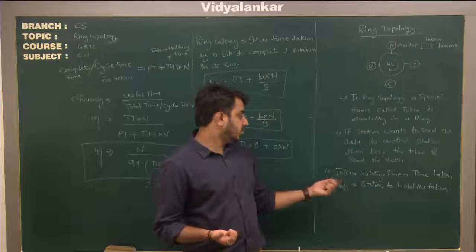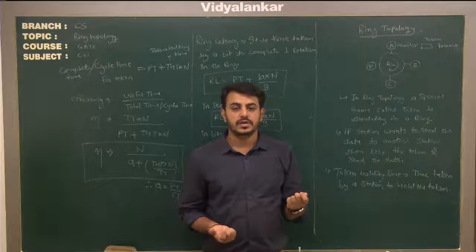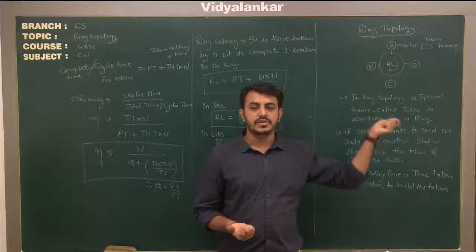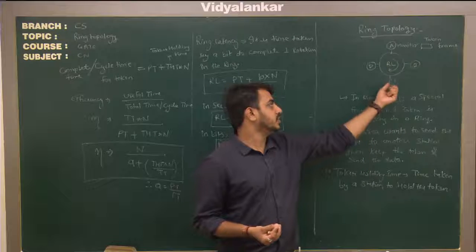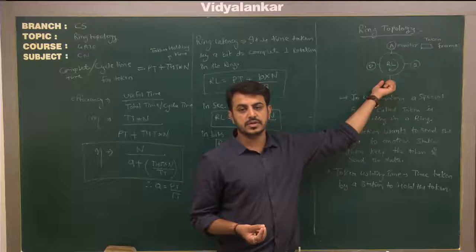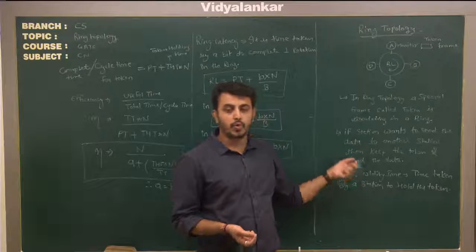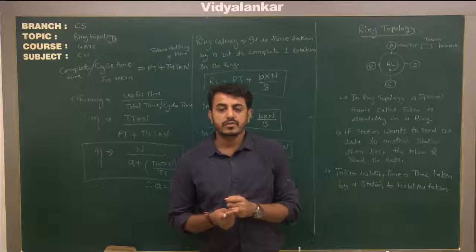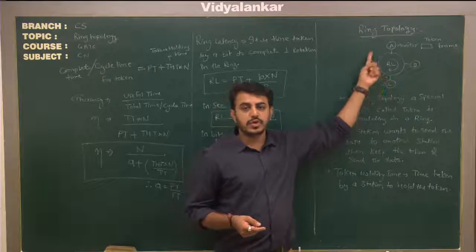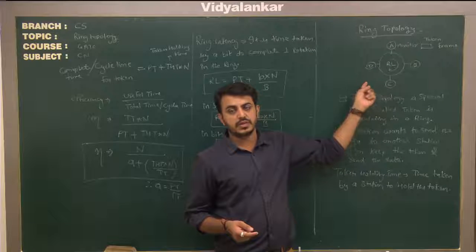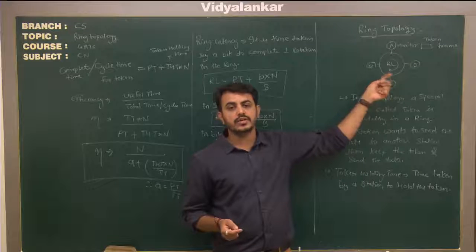Every station has to receive the token, and every station takes some time — that is the token holding time. That is the time taken by a station to hold the token. One more point: in ring topology, packets are sent in only one direction, either anti-clockwise or clockwise. Generally in every textbook, we always follow the clockwise direction.